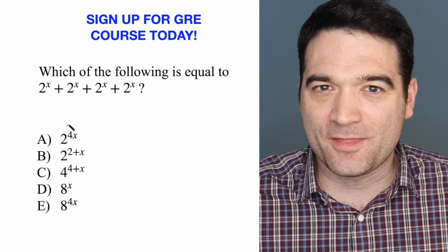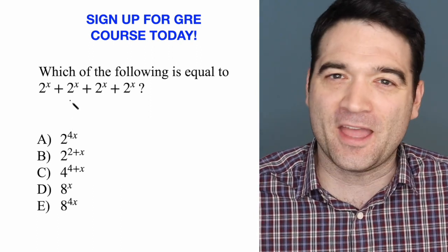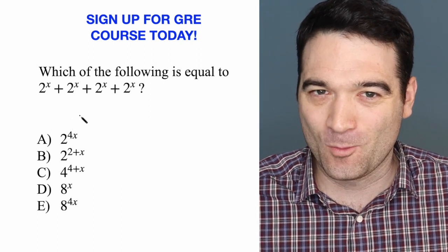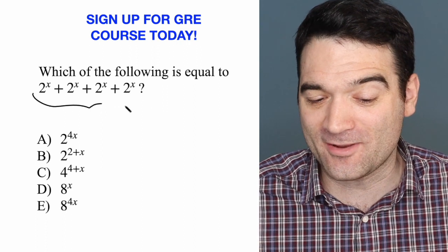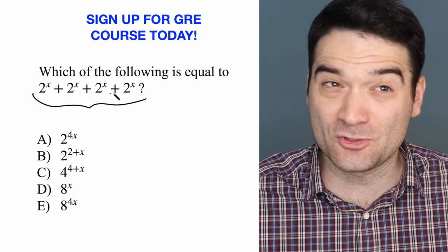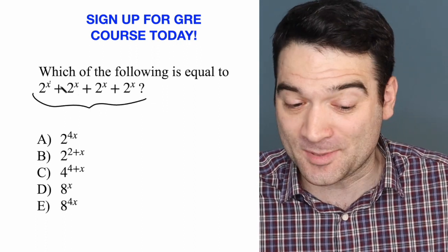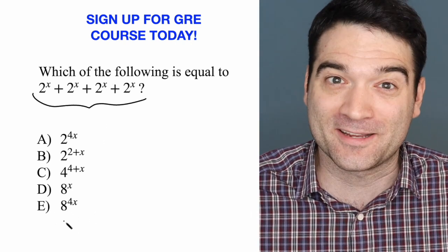When people see this problem, they start to invent their own rules. What do I mean by that? Someone might look at this and say, well, I have 2 plus 2 plus 2 plus 2, that's 8, and x plus x plus x plus x, that's 4x, so 8 to the power of 4x.